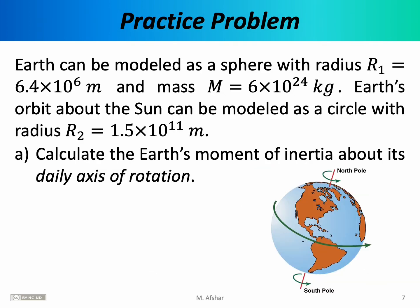Let's end this lecture with a practice problem. Earth can be modeled as a sphere with a radius of 6.4 × 10⁶ meters and a mass of 6 × 10²⁴ kilograms. Earth's orbit about the Sun can be modeled as a circle with a radius of approximately 1.5 × 10¹¹ meters. Calculate the Earth's moment of inertia about its daily axis of rotation. The daily axis of rotation is responsible for day and night, passing through the North Pole, the center of the Earth, and then the South Pole — so it passes through the center of mass of the Earth.